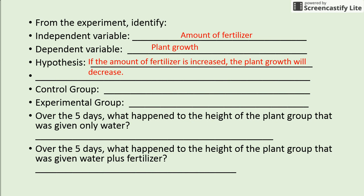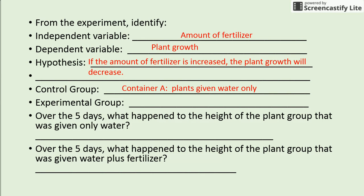For the hypothesis, search for that keyword in the sample experiment — it's written right there in the first sentence: if the amount of fertilizer is increased, the plant growth will decrease. We have our cause and effect — what we're changing and what we're measuring — and we're making an educated guess about what will happen. The control group, container A, does not get the independent variable — they are given water only. The experimental group is container B, because they are given the independent variable.